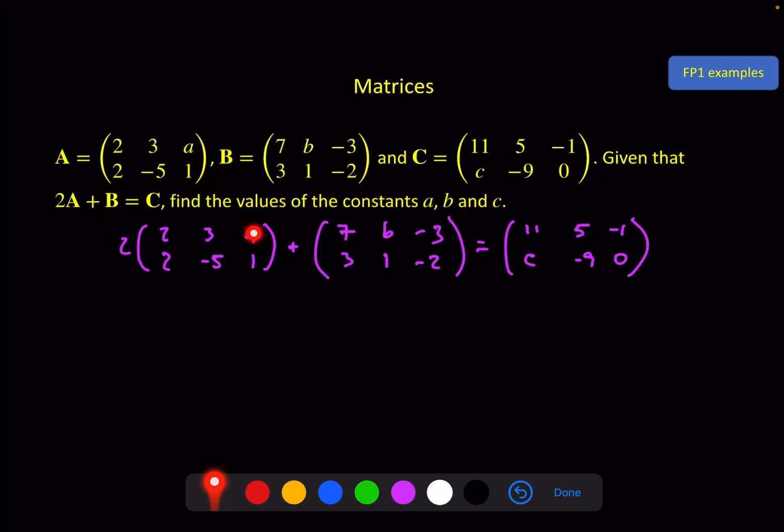And you probably don't need to write all of that out to see what we're going to do. We've got 2 times A plus minus 3 has to equal minus 1. So I can deal with the elements individually. We've got 2A minus 3 has to equal minus 1. So A is equal to 1. For the first row second column elements, we've got 2 times 3, that's a 6, plus B must equal 5. So B must equal minus 1.